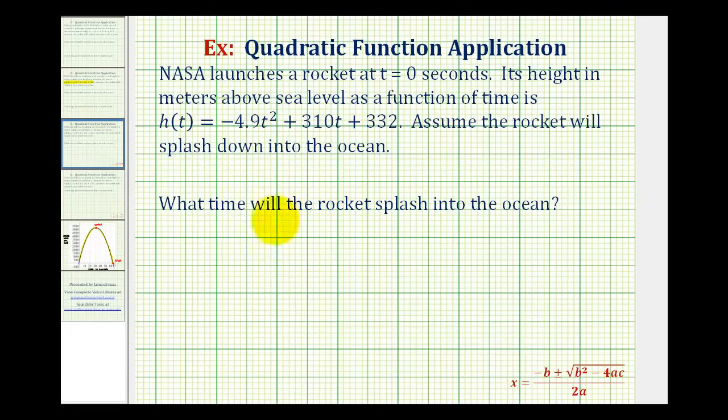Again, to find when the rocket splashes into the ocean, we know the height above sea level, or h of t, would be equal to zero. So we want to solve the equation 0 equals -4.9t² + 310t + 332. Well, this is not a factorable quadratic equation, which means we'll have to solve it using the quadratic formula given here below.